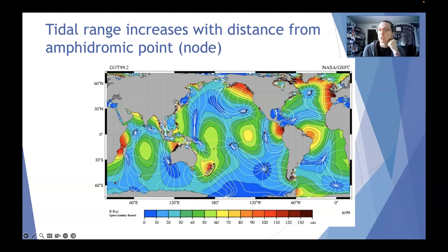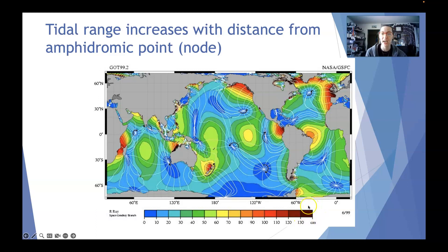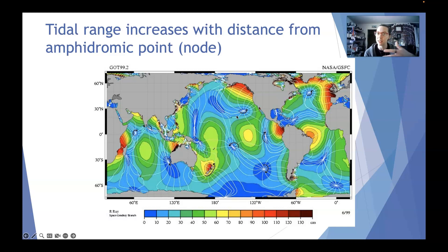This map is looking at tide range and how it increases with distance away from the amphidromic point — warmer colors indicating a higher tide range and cooler colors indicating a lower tide range. Where you see these nodes, where the white lines come together, there are cooler colors, meaning not a lot of tide range. If you've been to Hawaii and been on beaches there, you may have noticed there is a tide difference, but not a massive difference between high and low tide, because it's relatively close to the node point.